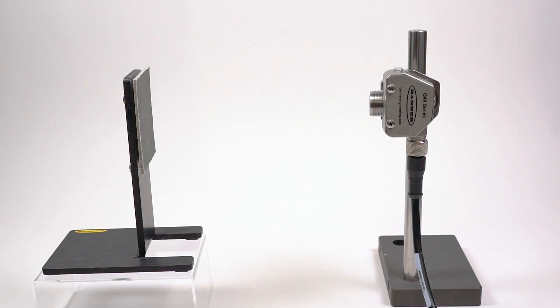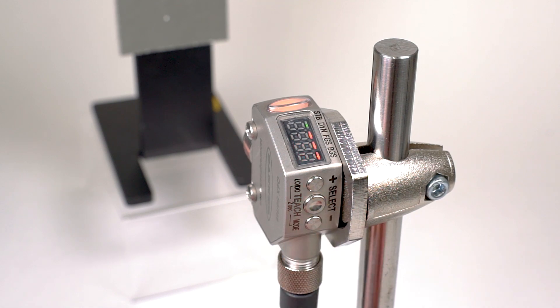Present a target that will function as a reference background and press the teach button again. The display will flash with a number indicating the switching threshold and then return to run mode.